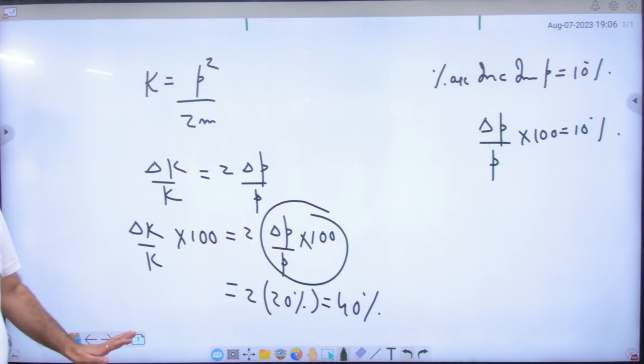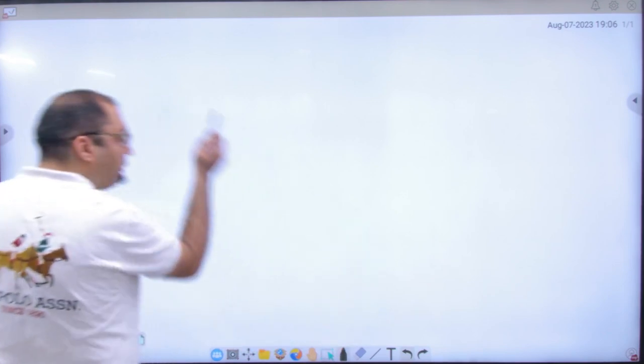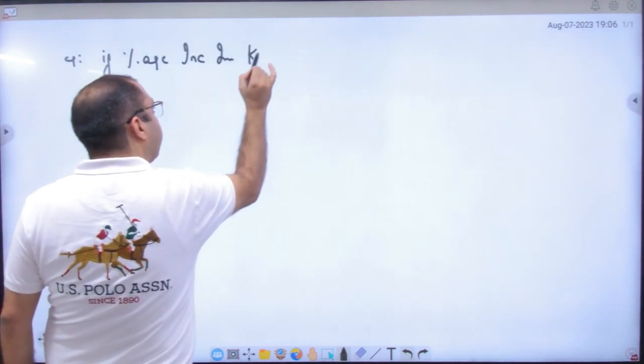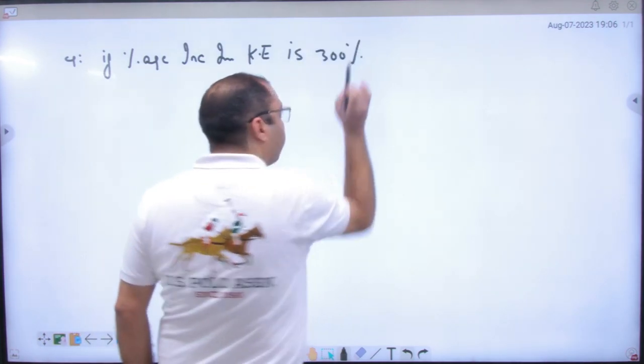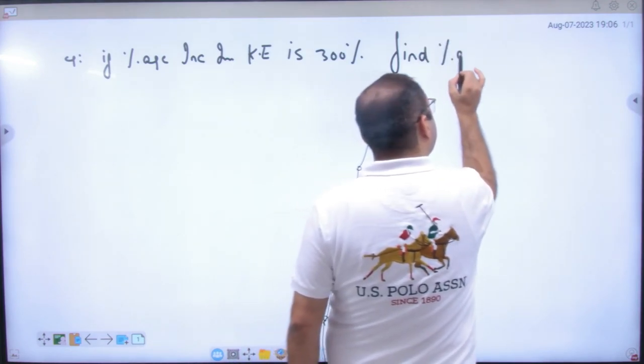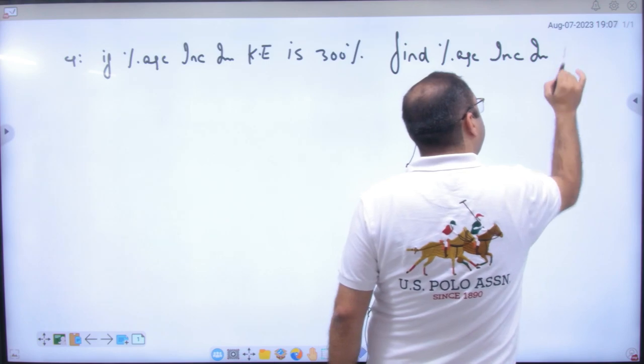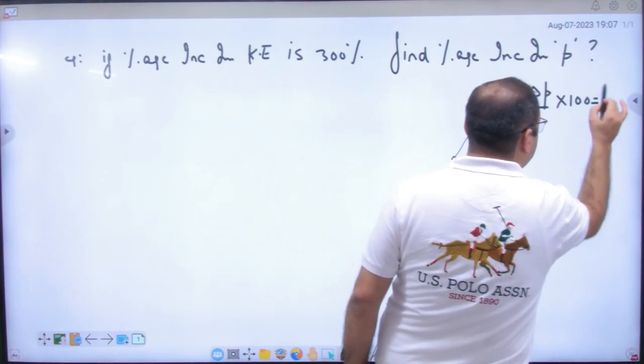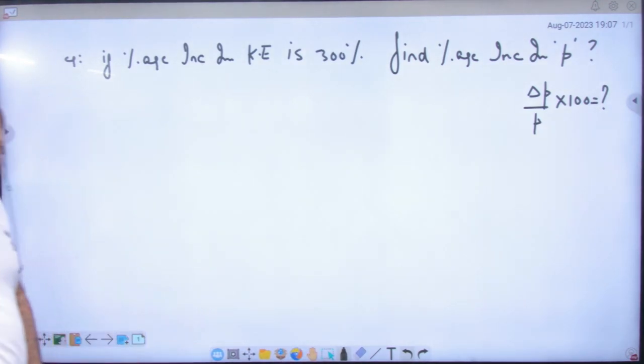Thik hai to yeh method clear hai. Achha ishi ka ulta question. Suppose likho, example: if percentage increase in kinetic energy is 300%, find percentage increase in momentum. Momentum to kya nikalna hai? Delta p by p into 100. Shortcut mat lagana please, exact method hi lagana. Shortcut bahut bekar answer dega iska. To aap exact method lagao. To kya given hai? Percentage increase in kinetic energy 300% hai. To percentage increase in momentum kya hoga?